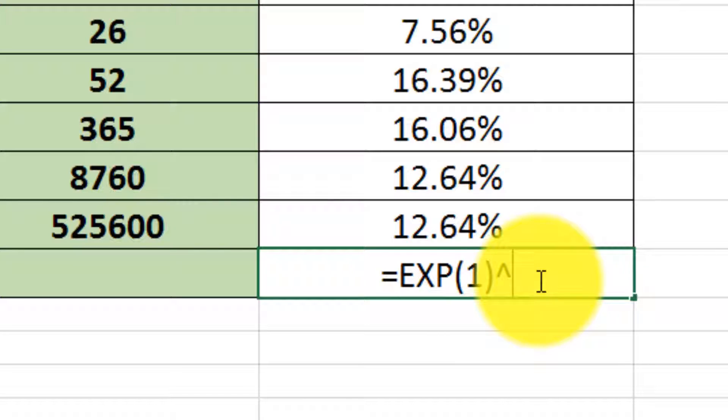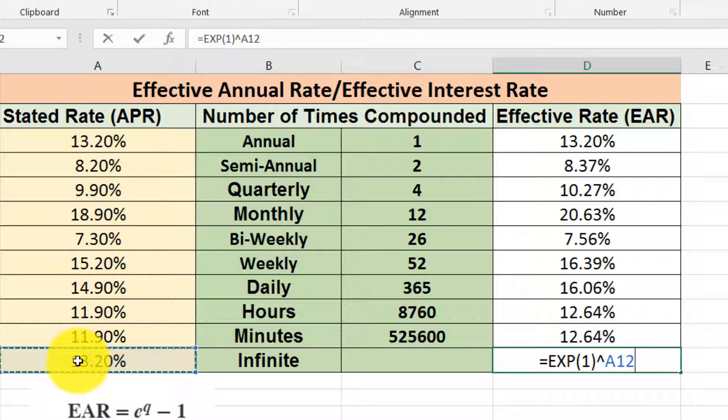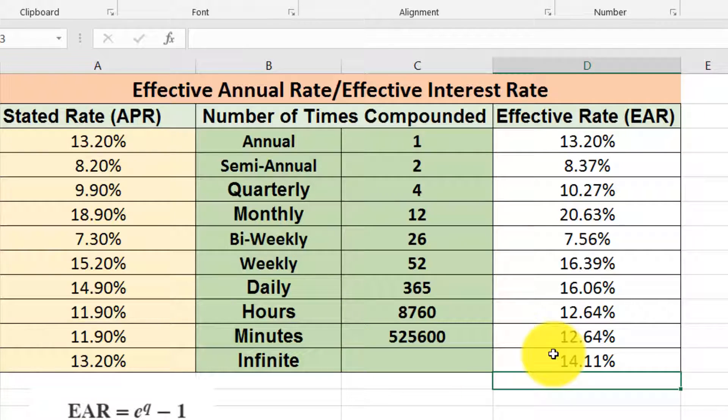Then subtract minus one, then press Enter. Now we are able to calculate the effective interest rate in the case of infinite in Microsoft Excel.